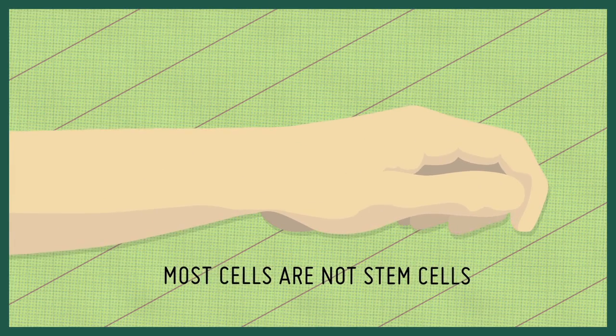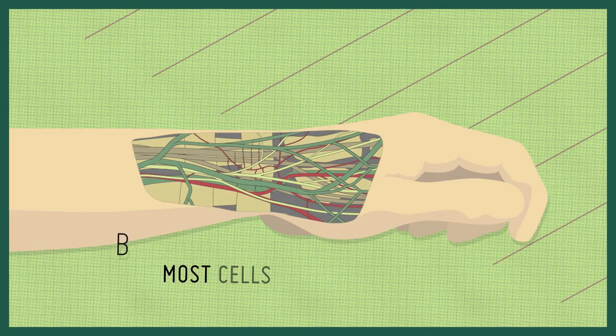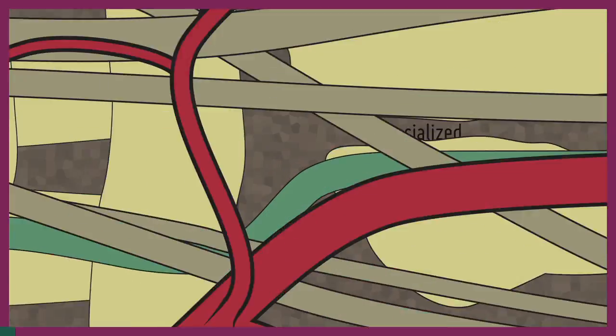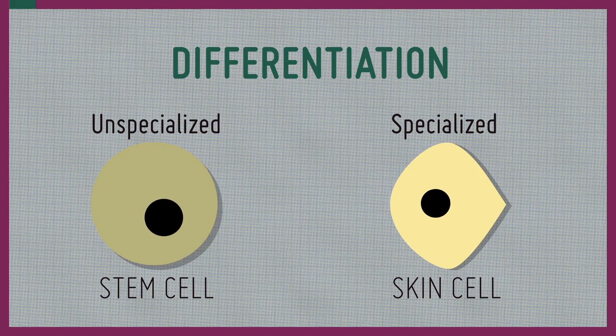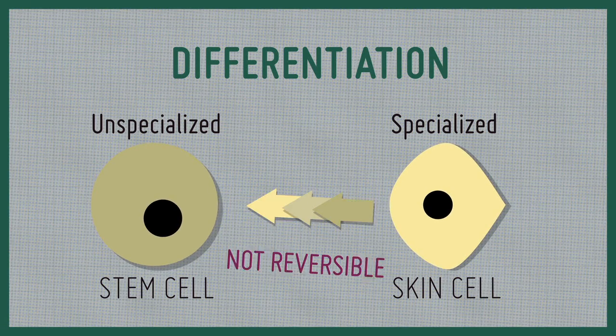Most of the cells in our bodies are not stem cells. For example, blood and skin cells have become specialized to perform a specific function in the body by a process known as differentiation that's normally not reversible.